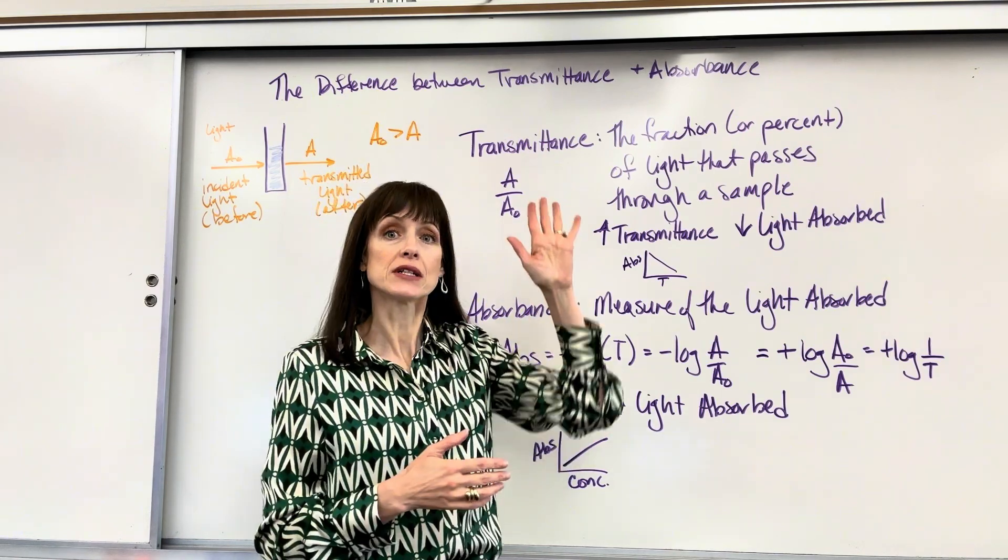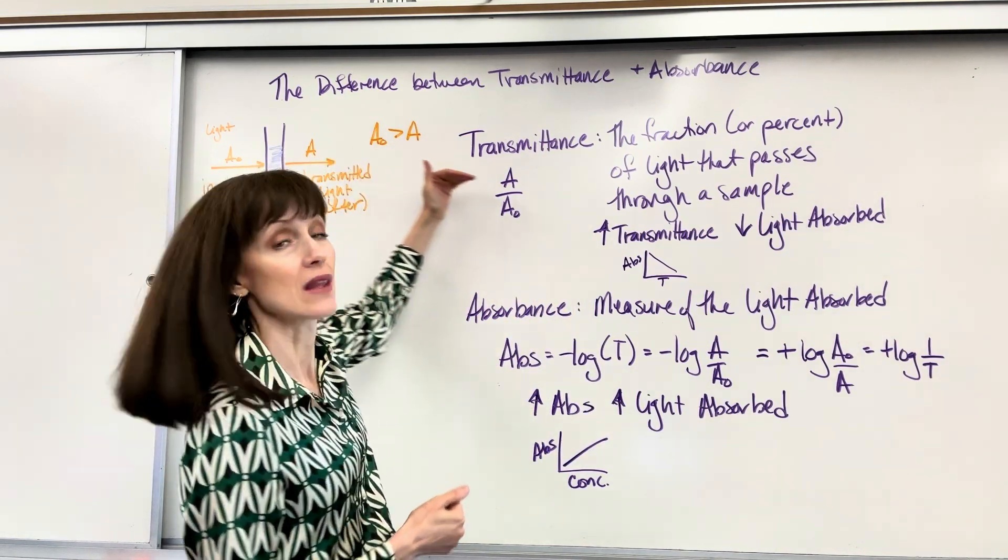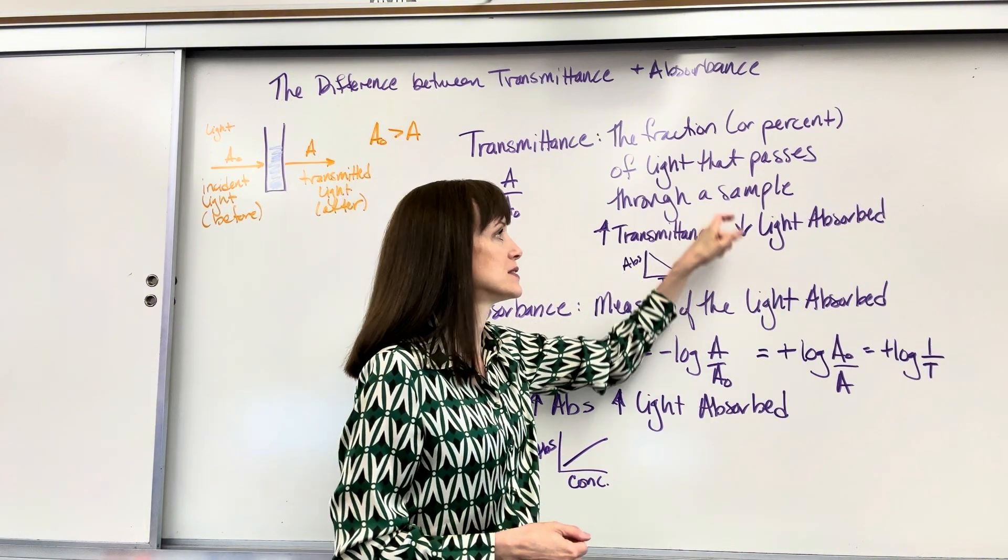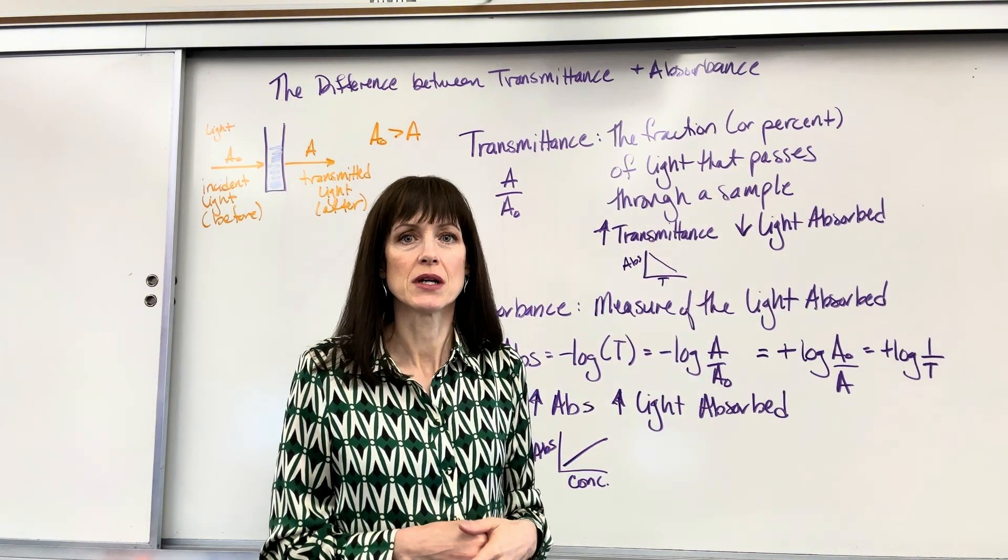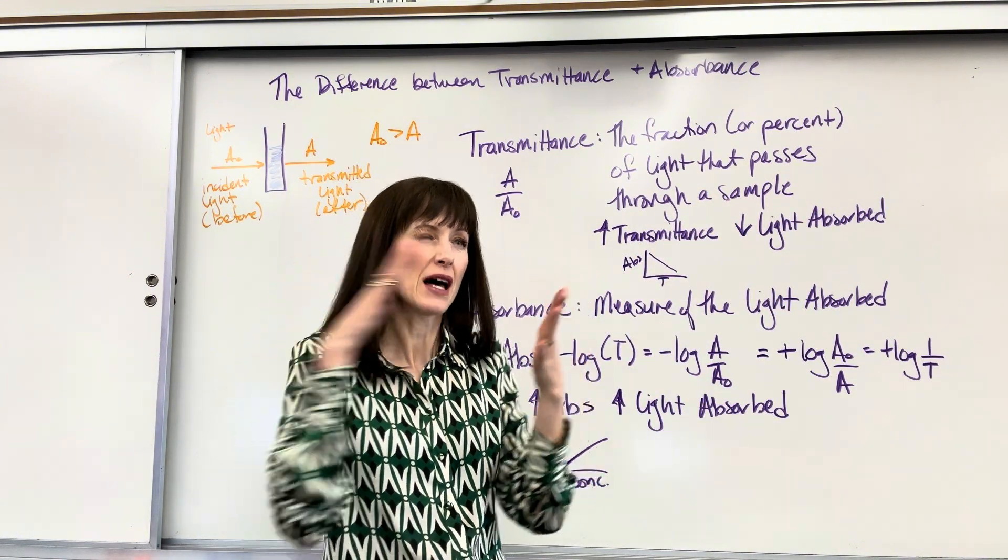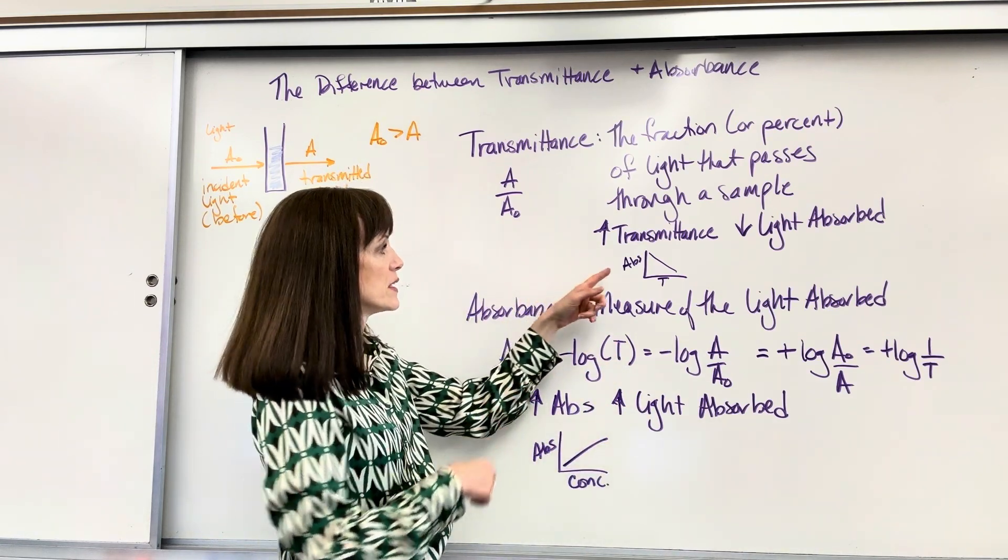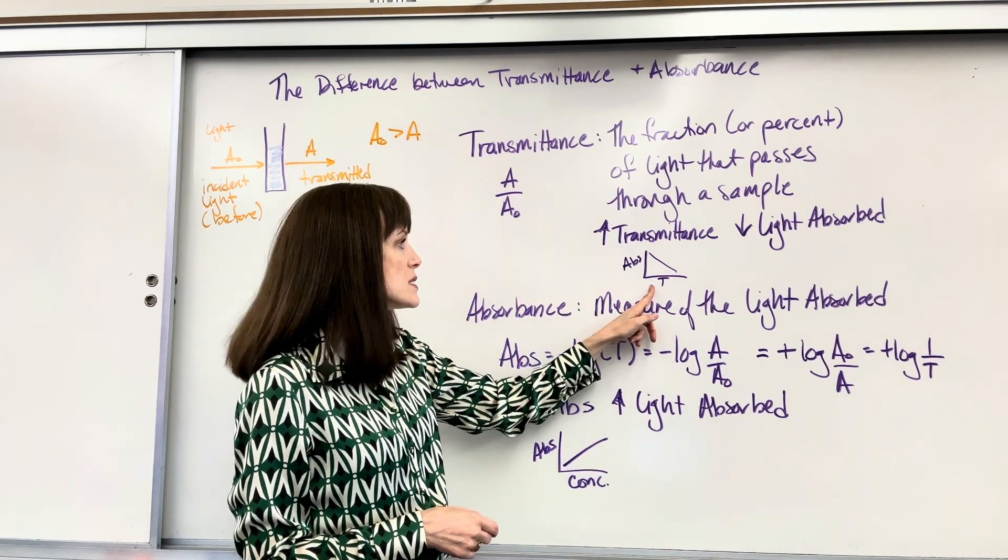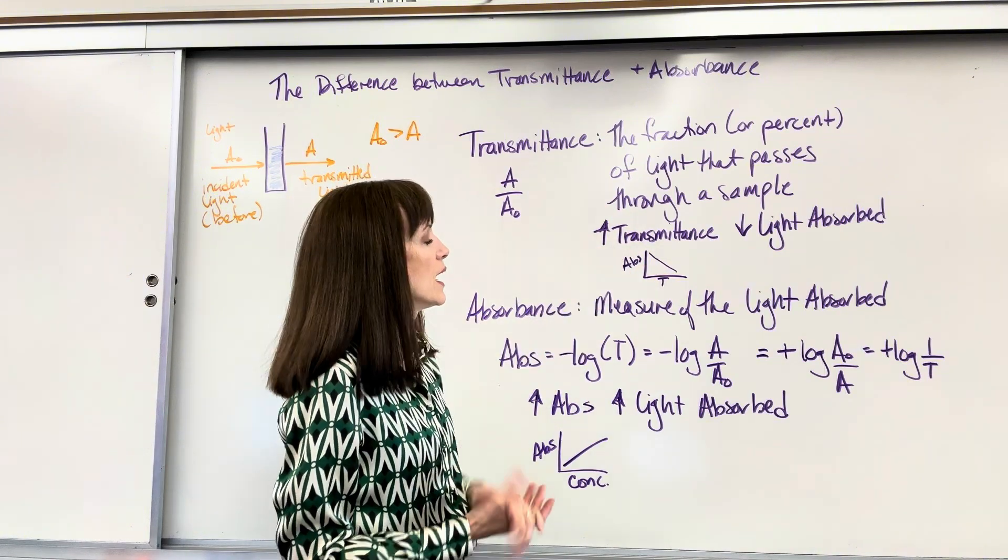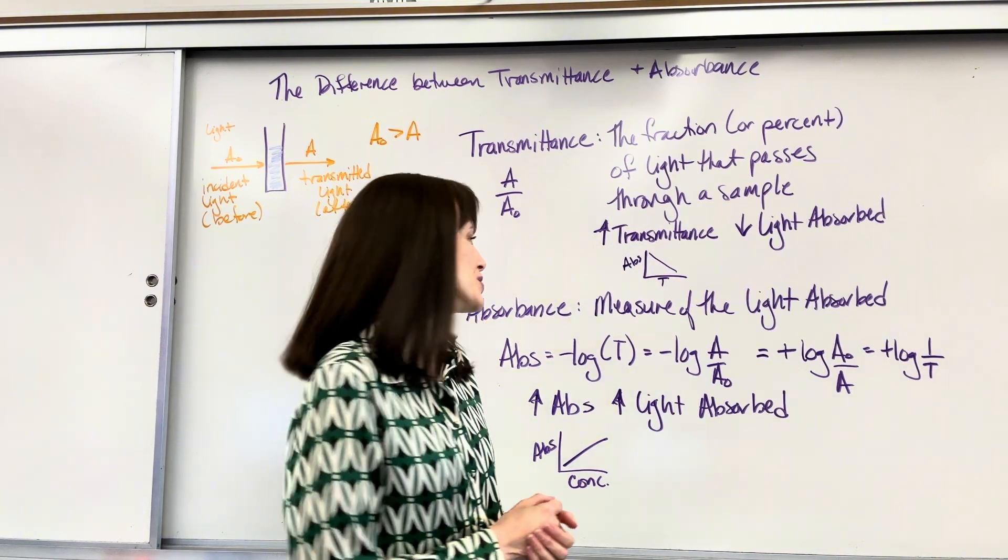Now I want to give you this big takeaway. If you increase transmittance, that means more light goes through the sample, that means that you decrease the light absorbed. So a high transmittance, a lot of light went through, not very much light was absorbed. And if we graph this, absorbance versus transmittance, you can see that it is a negative slope, an inverse relationship.